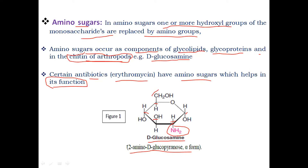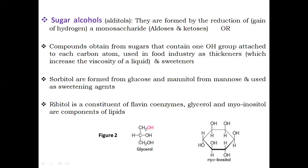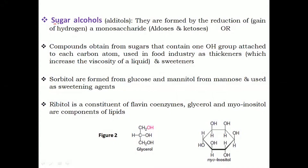This is D-glucose because the OH group at carbon 5 is present on the right side, and it is the alpha form because at carbon 1 the OH group is present on the lower side. At carbon 2, the OH group is replaced by an amino group — so this is an example of an amino sugar, D-glucosamine.